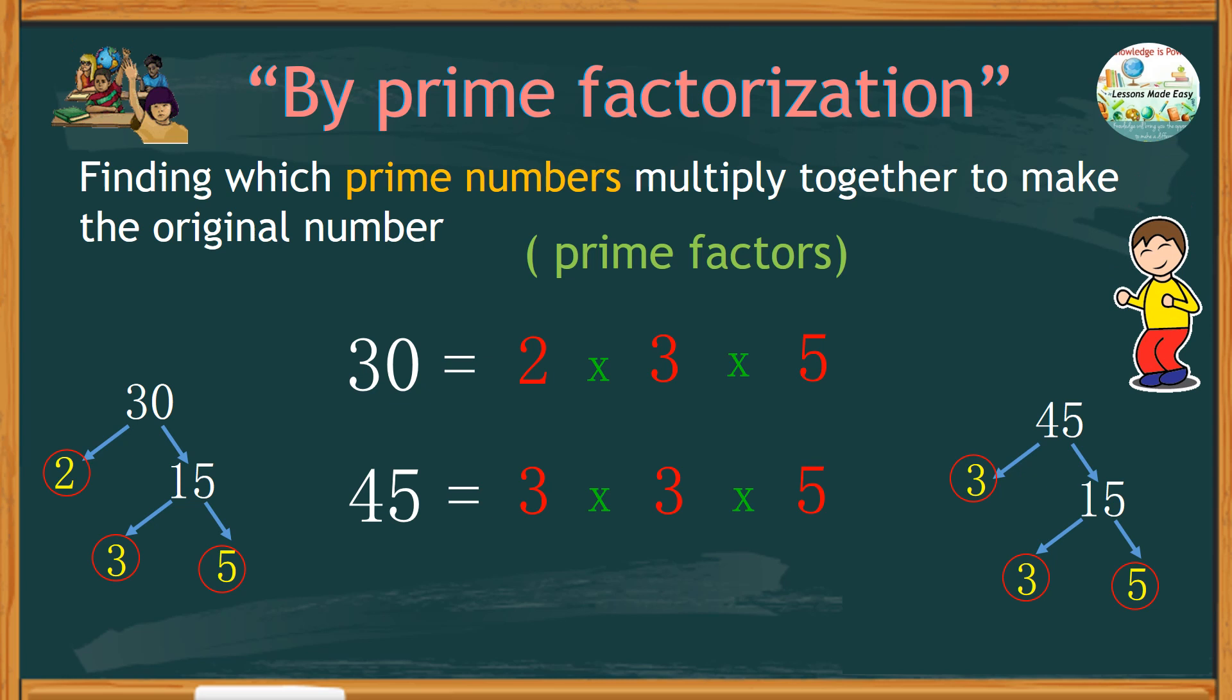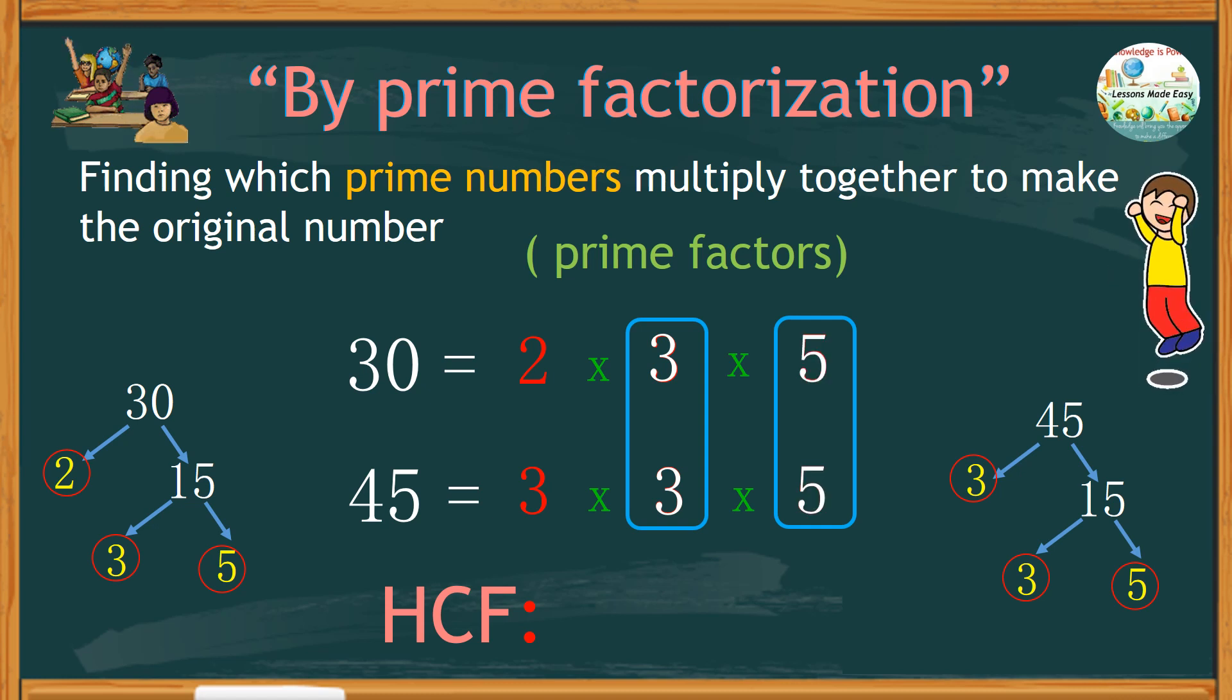From this listing, we can see the common factors for 30 and 45 are 3 and 5. All we have to do is multiply these numbers to get the highest common factor. 3 times 5 is 15. Therefore, the highest common factor of 30 and 45 is 15. As simple as that.